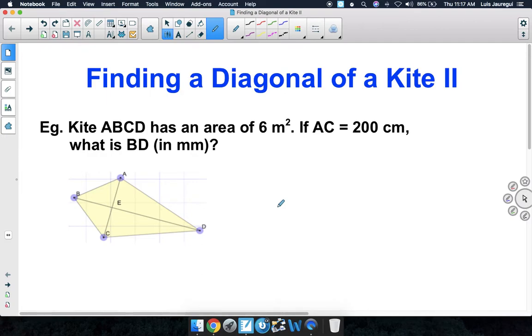Let's take a look at our example. Kite ABCD has an area of 6 square meters. If AC is equal to 200 centimeters, what is BD in millimeters?